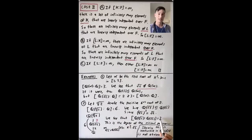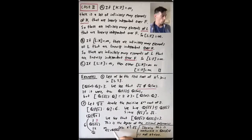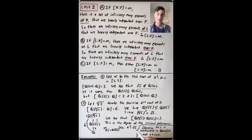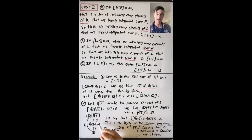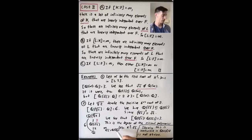By multiplicativity, the degree of Q(⁶√2) over Q(√2) must be 3. This degree equals the degree of the minimal polynomial of ⁶√2 over Q(√2). One monic polynomial with coefficients in Q(√2) satisfied by ⁶√2 is x³ - √2. It's not immediately obvious that this polynomial is irreducible in Q(√2)[x], but the fact that this field extension has degree 3 means the minimal polynomial has degree 3, which tells us that this polynomial must be irreducible.